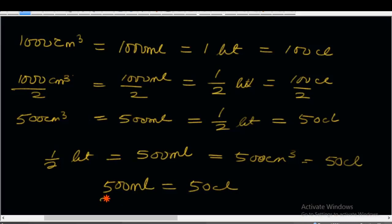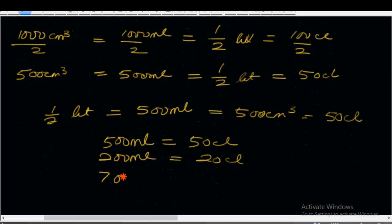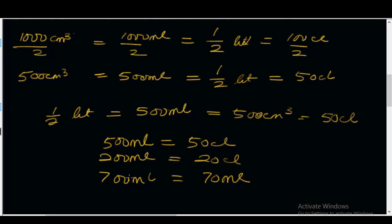It is also right to say 200 mL is equal to 20 centiliters, and 700 mL is equal to 70 centiliters. You can get measuring devices like beakers, conical flasks, and measuring cylinders to be able to get this measurement right.